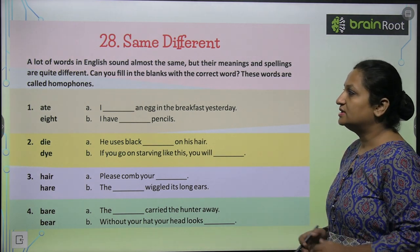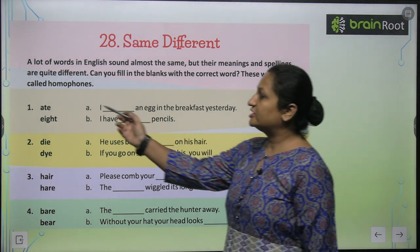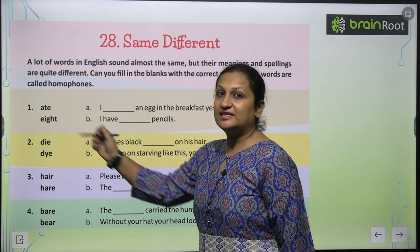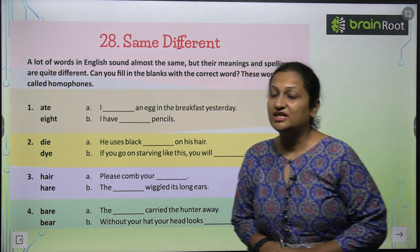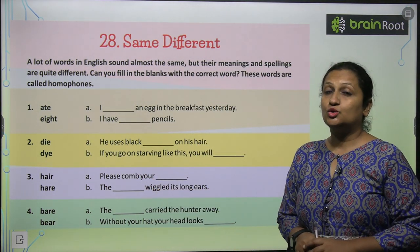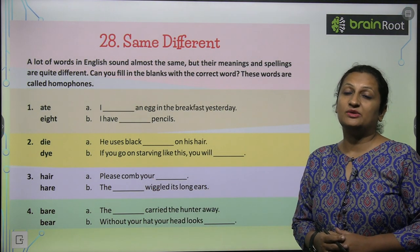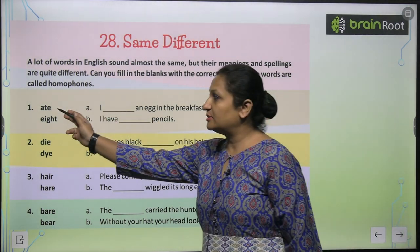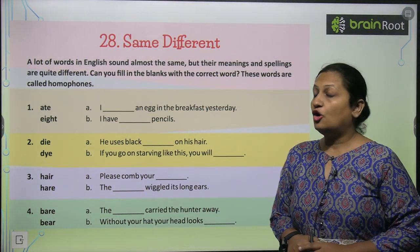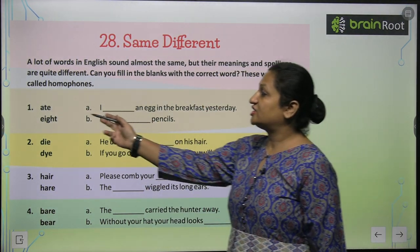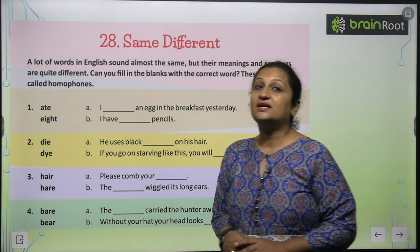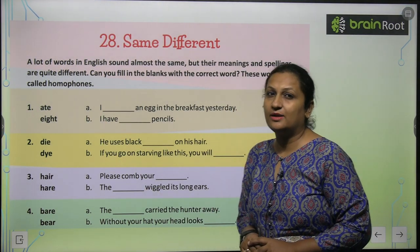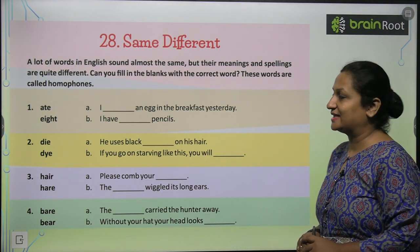Let's see some homophones. First we have 'ate' and 'eight'. The spelling of 'ate' is A-T-E and 'eight' is E-I-G-H-T. Dono ki sound bilkul similar hai. 'Ate' ka matlab hota hai khana khana — to eat something — aur 'eight' is a number. So let us fill them in the blanks.